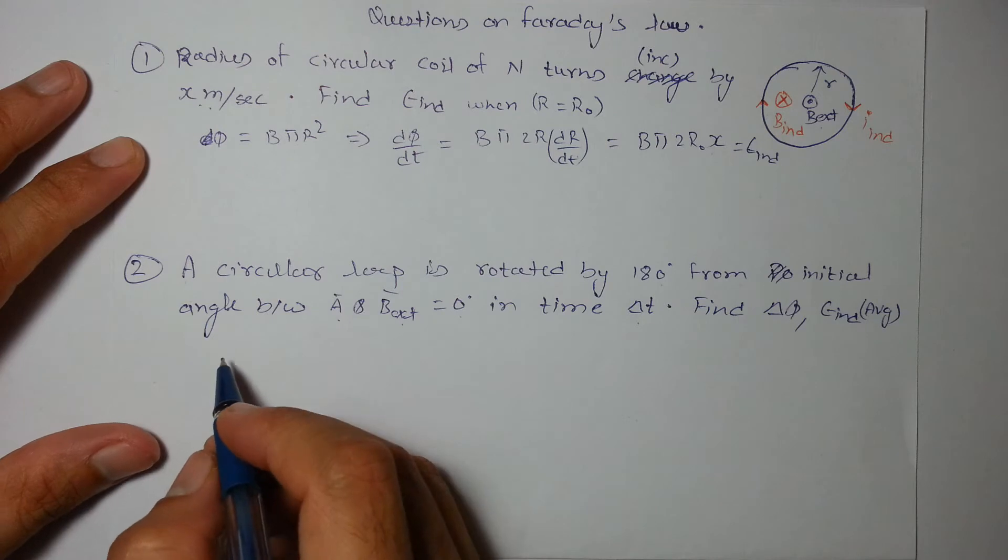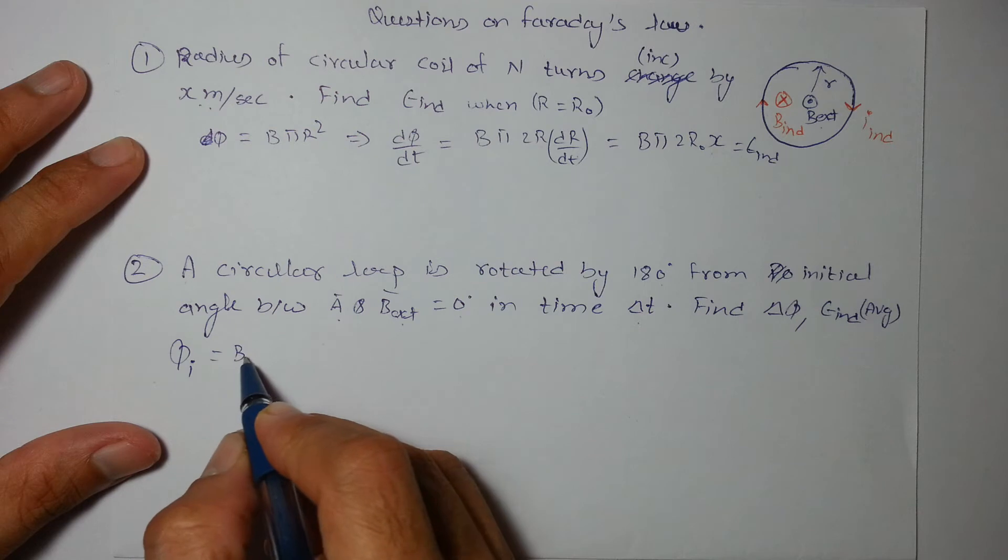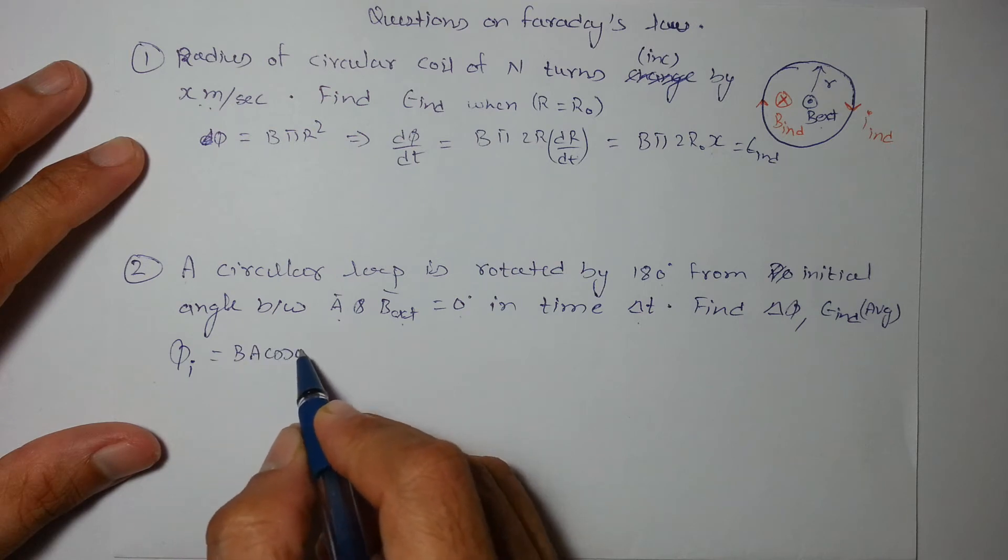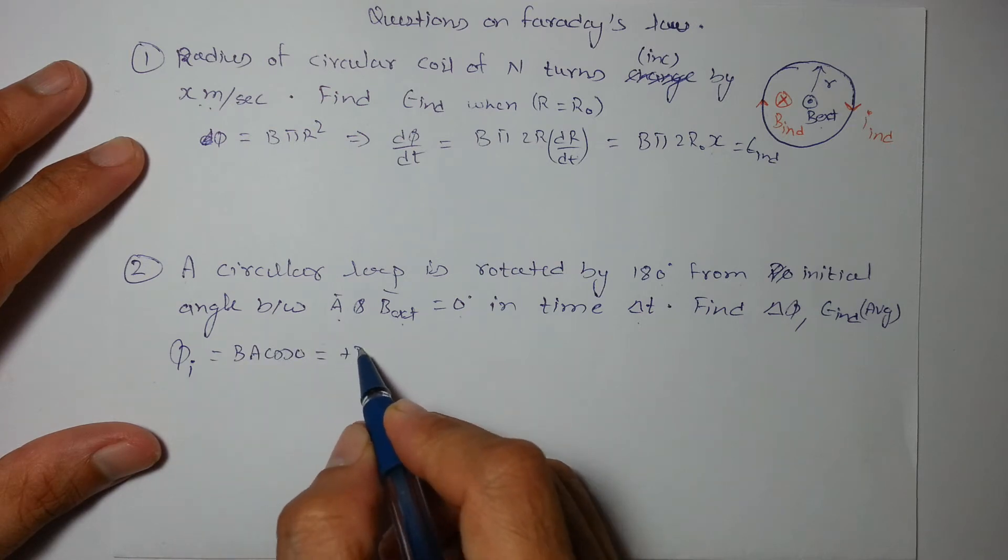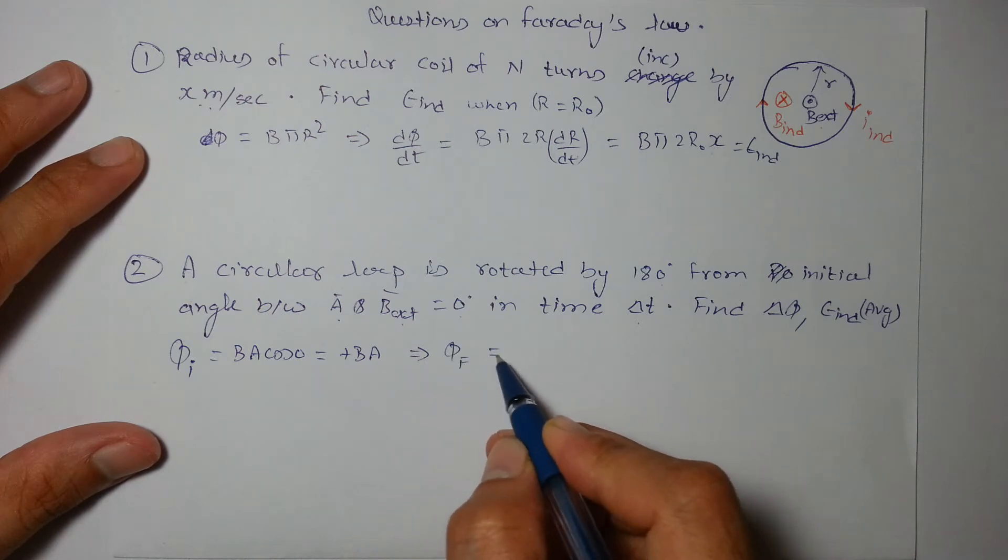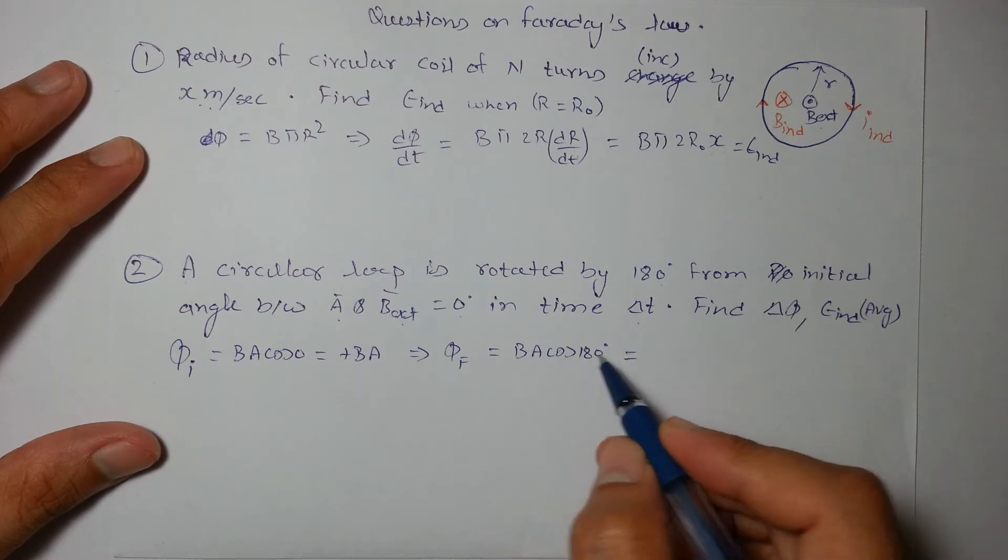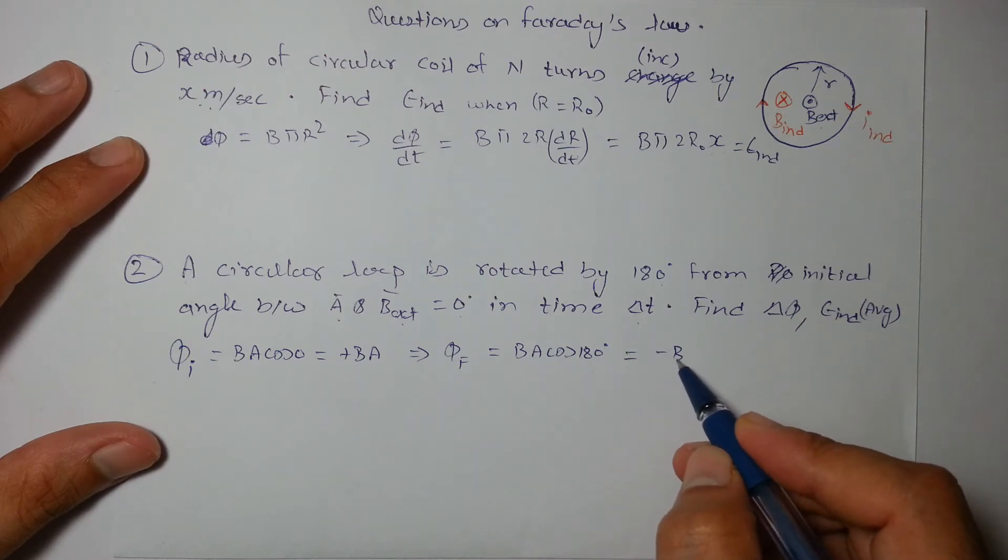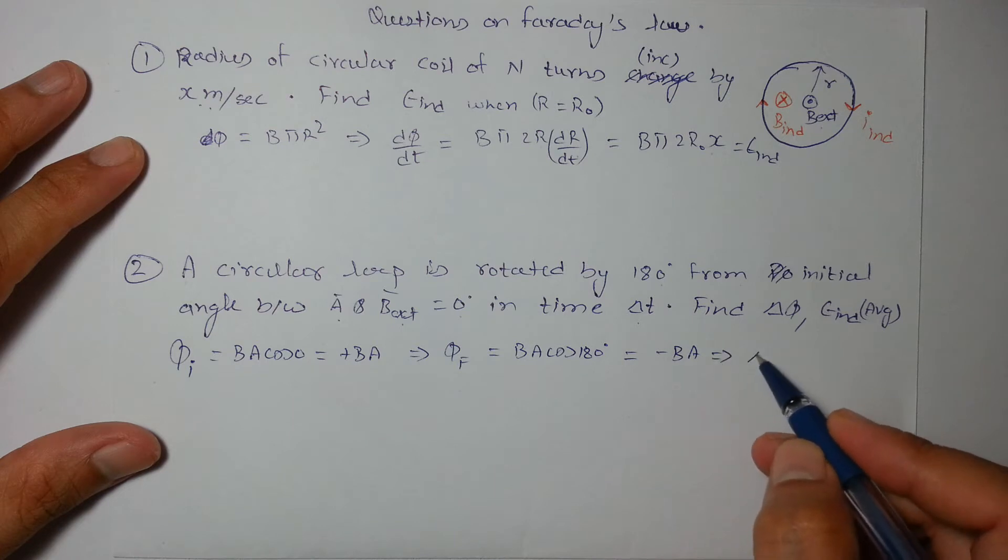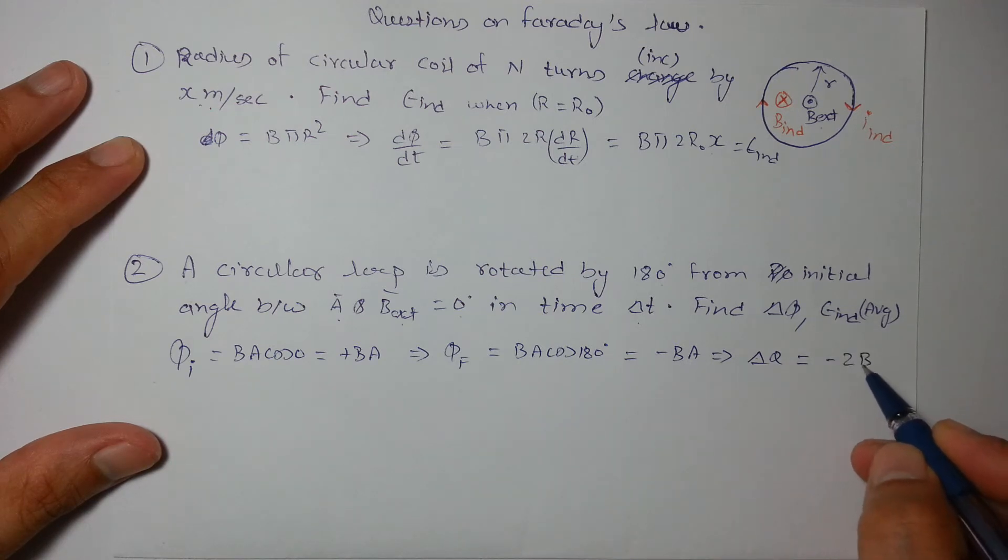So first of all we have to find change in flux. Initial flux is BA cos 0 so that will be plus BA and final flux will be BA cos 180 degree. As the final angle is cos 180 degree so it will be minus BA. So we can say change in flux delta phi will be equal to final minus initial so that will be minus 2BA.